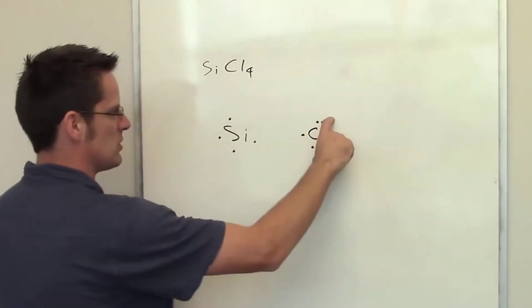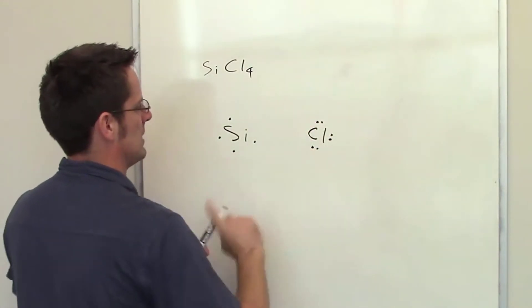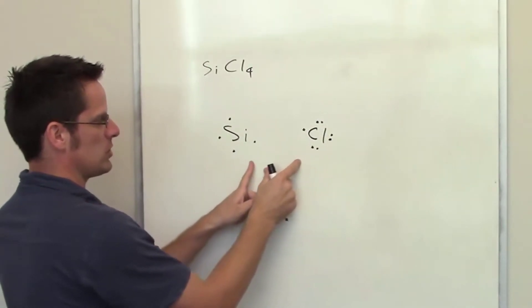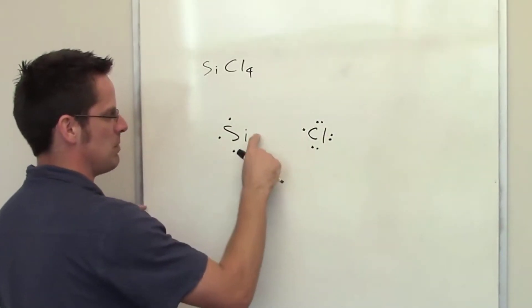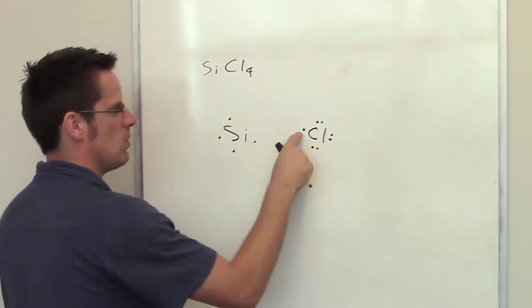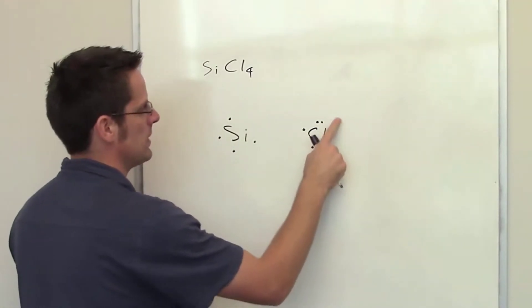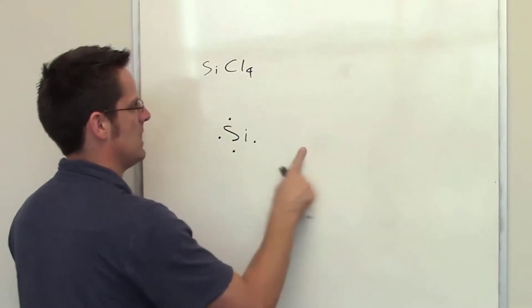Now I want you to imagine each of these four chlorine atoms approaching, and in fact I could draw this valence electron up there. As this chlorine atom gets closer to the silicon atom, it essentially is going to plug this hole right here with its unpaired electron, and this silicon is going to plug the chlorine's hole with its unpaired electron. So what I'm going to end up getting is this.